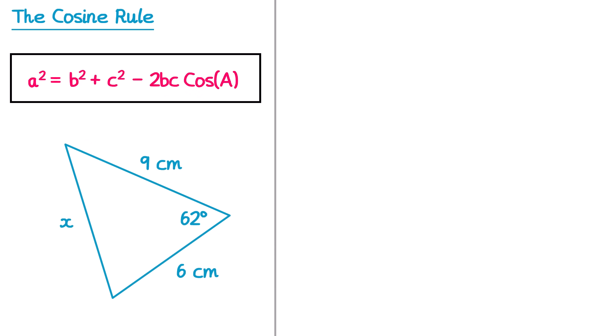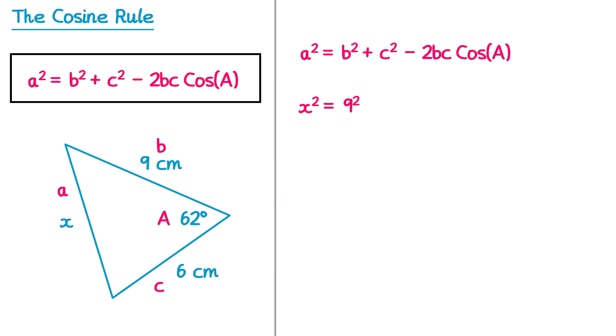Let's try a second example of that now. So a different triangle this time, but once again we need to use the cosine rule. We can start by labelling the missing side we're trying to find as lowercase a, and the angle that's opposite that one, capital A. The other two sides given in the question must be b and c — I'm going to make b the 9, and c the 6. Then we take the formula for the cosine rule and substitute in these values. So instead of a squared we have x squared, and then instead of b squared that's 9 squared, and instead of c squared that's 6 squared, then it's subtract two lots of b, which is 9, multiplied by c, which is 6, and multiplied by cos of A — so that's cos of 62.